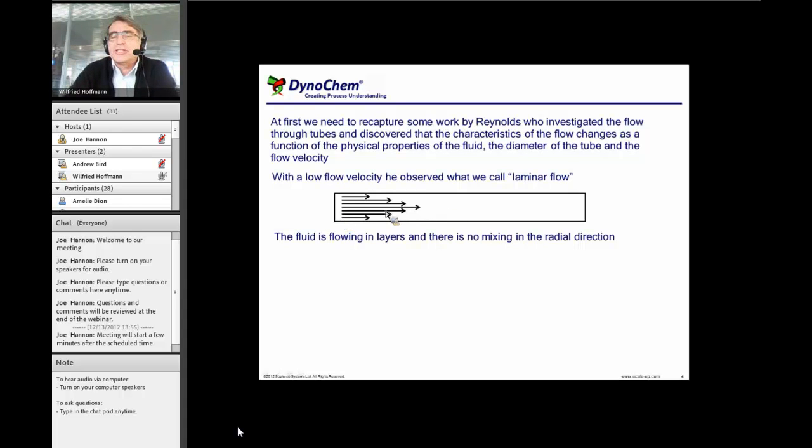The flow actually is in layers and the flow in the center of the tube propagates with a higher speed than the flow at the edges. So we will get a flow profile and there is essentially no radial mixing. So these propagation continues throughout to the end of the flow.